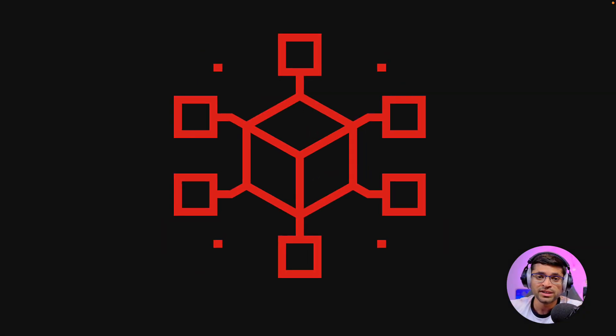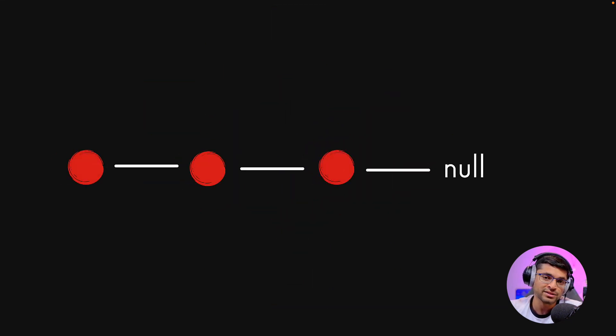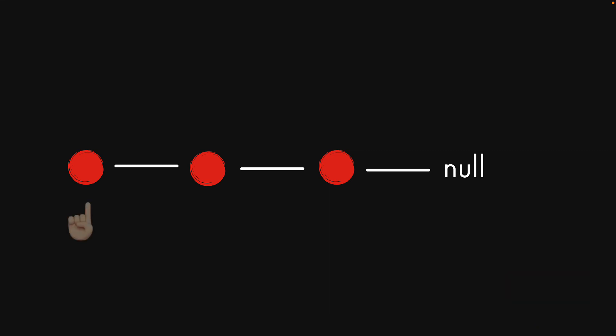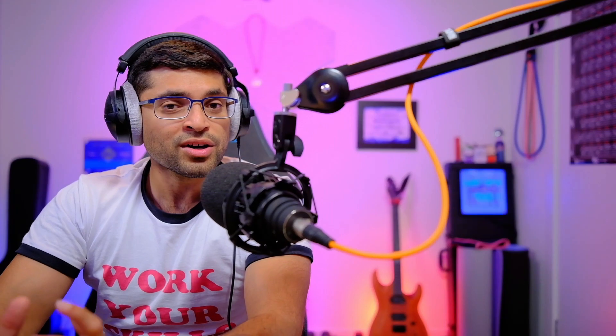Now before I scare you away with terms like trees and graphs, we've actually already looked at a graph on this particular channel when we looked at the linked list data structure. A linked list is actually an example of a graph data structure. A graph is nothing more than a set of nodes pointing to other nodes. In the case of a linked list, we have our head node pointing to the next node via its next member and so on and so forth till we eventually arrive at a null value. Now a graph is a very general data structure and it includes pretty much any data structure where you have nodes pointing to other nodes.